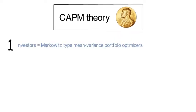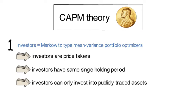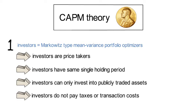First assumption: all investors are Markowitz-type mean-variance portfolio optimizers. That means all investors are price takers — their wealth is so small relative to the total wealth in an economy that their trading doesn't affect asset prices. It also means all investors have the same single holding period, making them myopic. Investors can only invest in publicly traded assets, and none pays taxes or transaction costs.